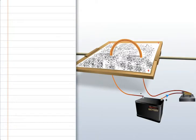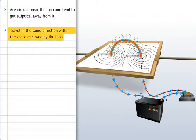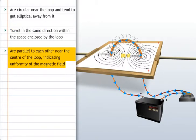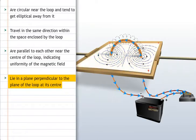Magnetic field lines around the current carrying circular loop have the following properties. The lines are circular near the loop and tend to get elliptical away from it. They travel in the same direction within the area enclosed by the loop. They are parallel to each other near the center of the loop, indicating the uniformity of the magnetic field. They lie in a plane perpendicular to the plane of the loop at its center.